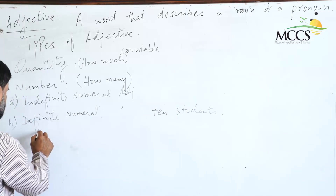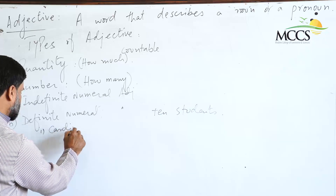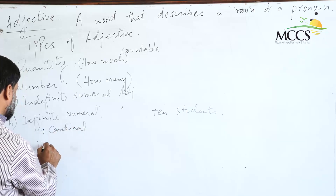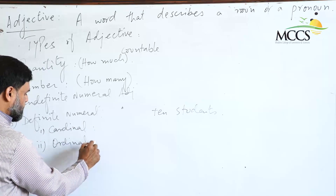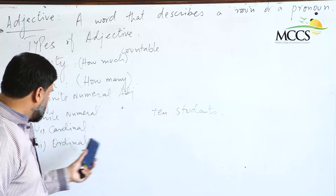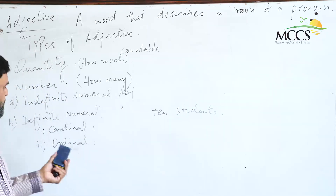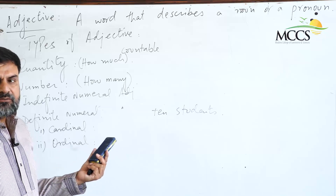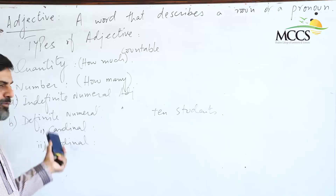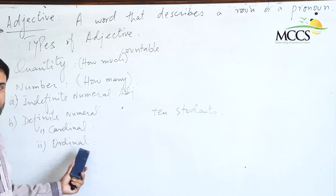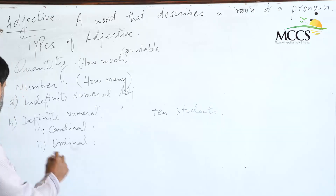Definite numeral adjectives are of two types. The first is cardinals and the second is ordinals. Cardinals tell us about the number — one, two, three, four. Ordinals tell us about the order of the noun — for example, he got the first position, or he was the second person to arrive. So first, second, third, fourth are termed as ordinals.